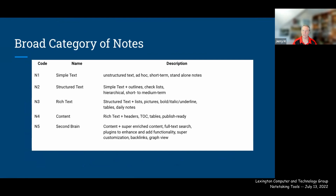There's a broad category of note types. First is the basic simple note — unstructured text, ad hoc, short-term, brief. It could be the start of an email you're drafting or a quick to-do list for the day that doesn't need to last beyond that scope. The next type is structured text — simple text plus outlines, checklists, hierarchical organization, short to medium term. Something a bit more permanent than a temp file.